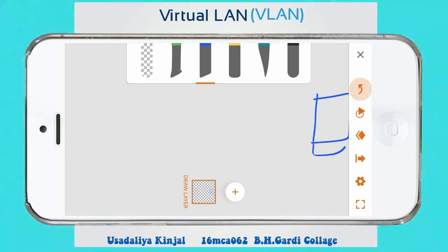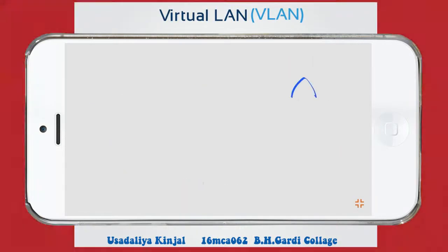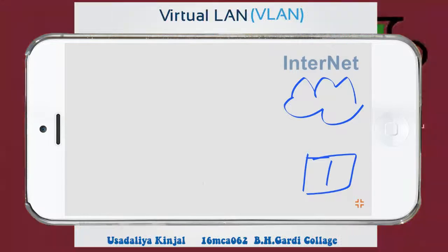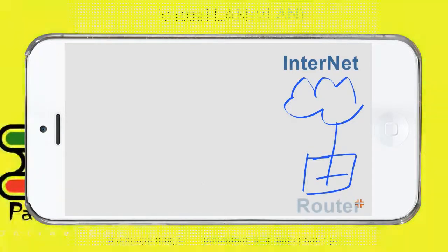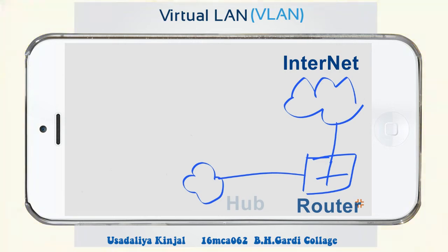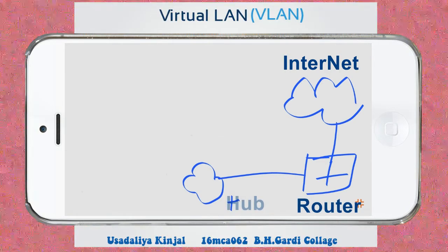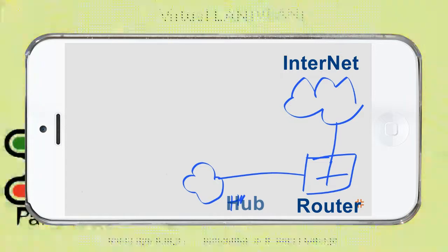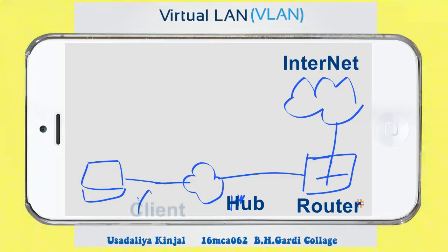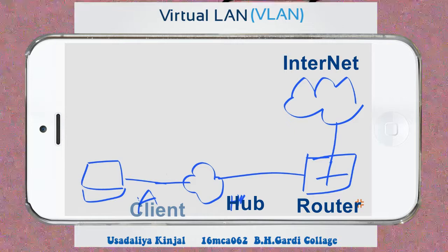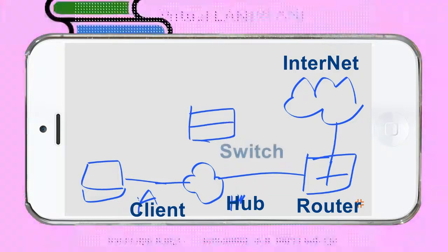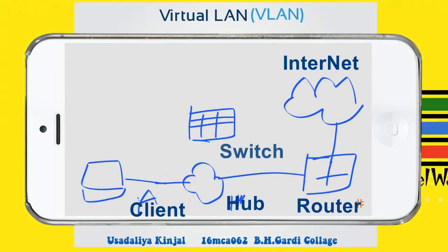Now draw the internet connection of router. The router connection goes to hub, and hub joins to one work PC. Now create switching, and switching joins to the hub.